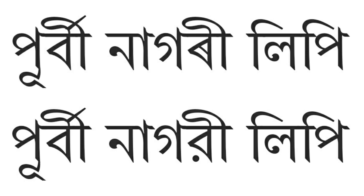Eastern Nagari is less blocky and presents a more sinuous shaping. Eastern Nagari is derived from the precursor script Siddham. The modern Eastern Nagari script was formalized in 1778 when it was first typeset by Charles Wilkins.